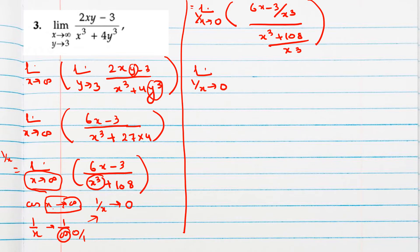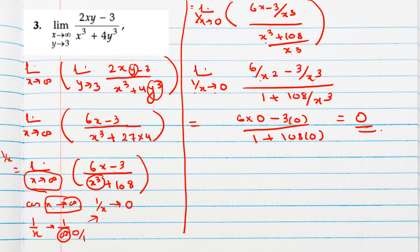So you will get 6x by x cube means 6 by x square, minus 3 by x cube, and x cube by x cube means 1, and 108 by x cube. Now if you apply, see everywhere 1 by x is tending to 0 means 1 by x square, 1 by x cube also will tend to 0. So our final answer will be 6 into 0, 3 into 0, 1 plus 108 into 0. So final answer will be 0.